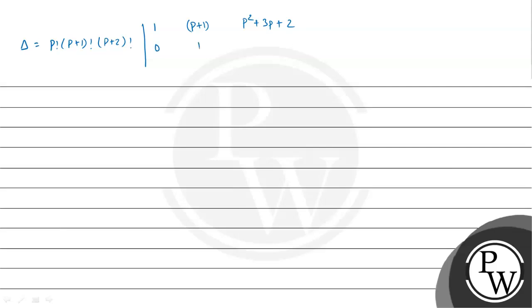After performing row operations, row 2 becomes 0, 1, and 2p plus 4; row 3 becomes 0, 1, and 2p plus 6. Now we will solve and expand the determinant. Since we have two rows simplified, we expand.